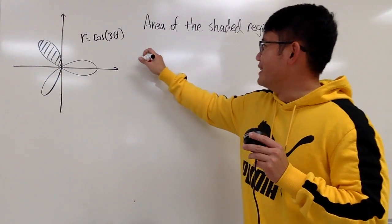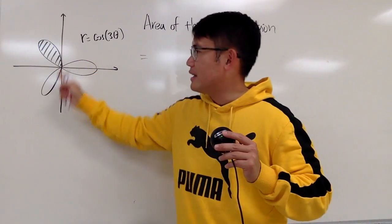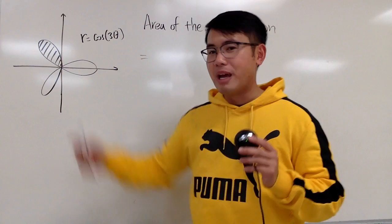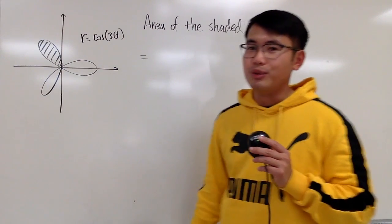So an easy way to do it is that, well, let's get the area of this, this, and that. And since this, this, and that, they're all the same, we just want one of them, so we can just divide the whole, divide it by 3, we can get the shaded region.